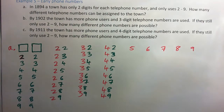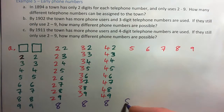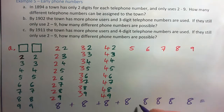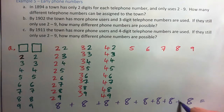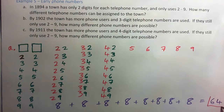And so the answer is, if you listed them all out — 8 options starting with 2, 8 starting with 3, 8 starting with 4, 8 starting with 5, 6, 7, 8 — you add them all up: 8 groups of 8 gives us 64 options. And that would be the answer to part A.